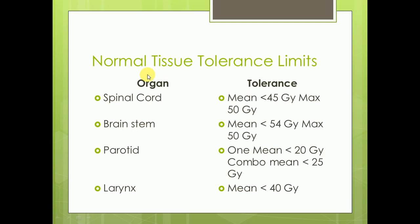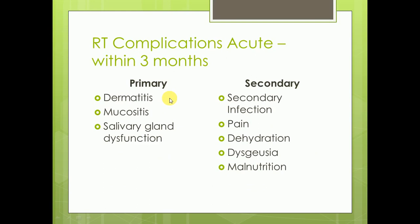Normal tissues have tolerance limits for radiation. Spinal cord: mean less than 45 Gy, maximum 50 Gy. Brainstem: mean less than 44 Gy, maximum 50 Gy. Parotid: if single modality, mean less than 20 Gy; if in combination, mean less than 25 Gy. Larynx: mean should be less than 40 Gy.